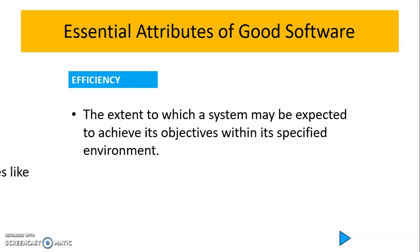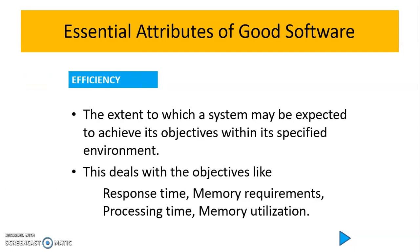The third essential attribute is efficiency, which checks whether the system achieves its expected objectives. As written here, it is the extent to which a system may be expected to achieve its objectives. In efficiency, we focus on response time, memory requirement, processing time, and memory utilization.